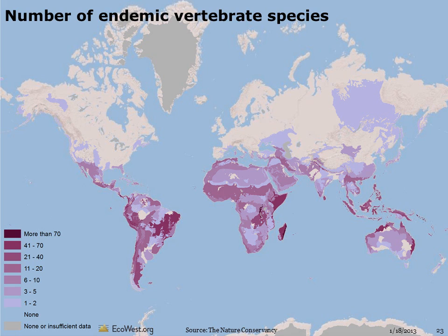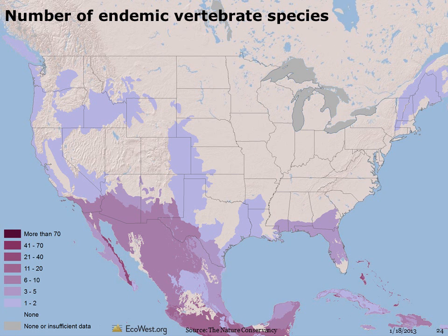Another high-level measure of biodiversity is endemism — the number of species found in one area but no other place on Earth. This map shows the number of endemic vertebrates by terrestrial ecoregion. Endemic species of birds, mammals, and reptiles have typically evolved in isolated habitats, such as islands. Endemism tends to be greatest in the tropics and in places with many islands. In the US, the number of endemic vertebrate species is highest in the southwest and Gulf Coast states. Even arid areas have islands of isolated habitat, such as mountaintop forests surrounded by deserts, that can give rise to endemism.